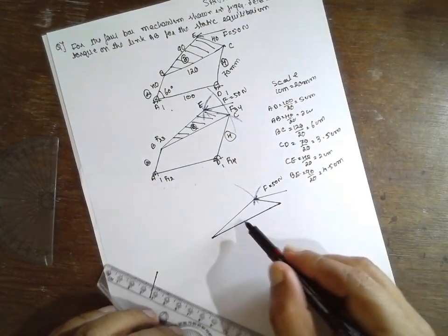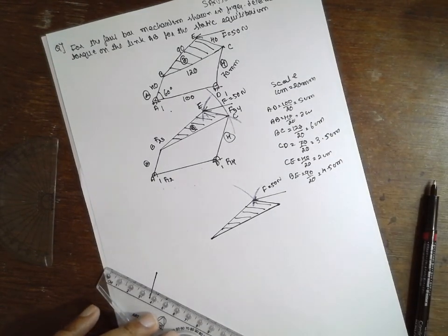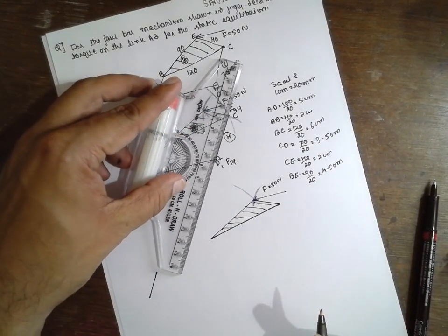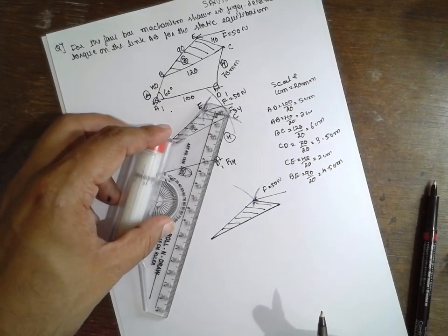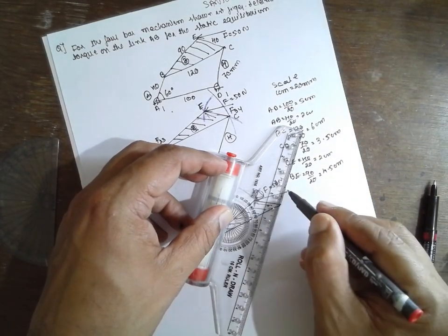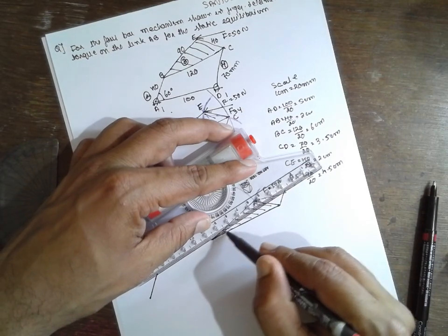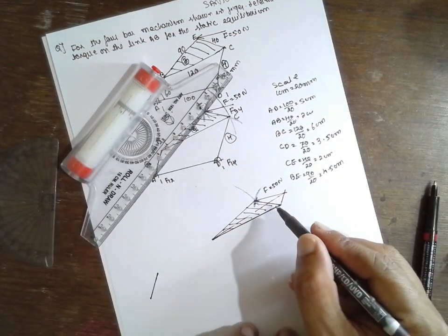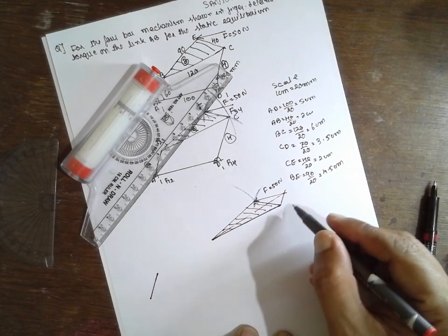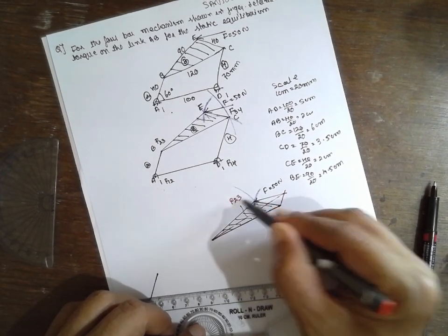Now this is the hinge part. Just move this link here, move this link and draw a dotted line till it touches to this force. Then this point, draw a dotted line till it touches this one. Now, based on this one, you can find out the force polygon. Now, name of this link is nothing but F23, this one is F34.